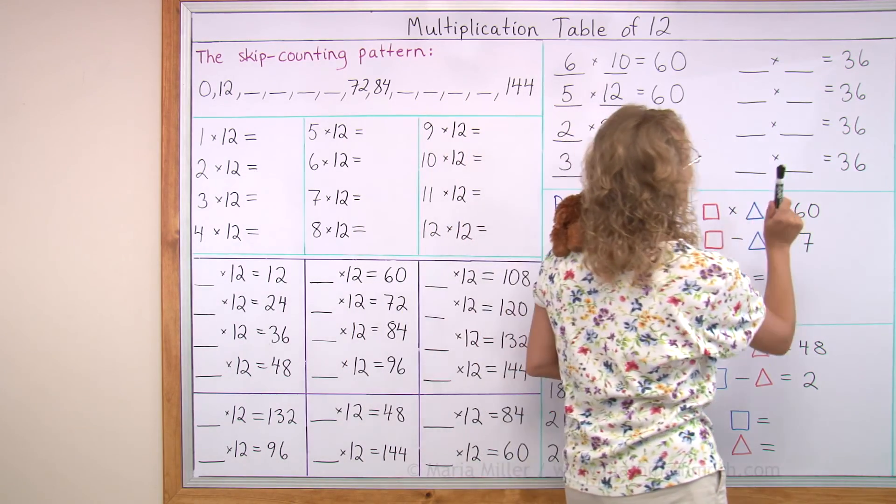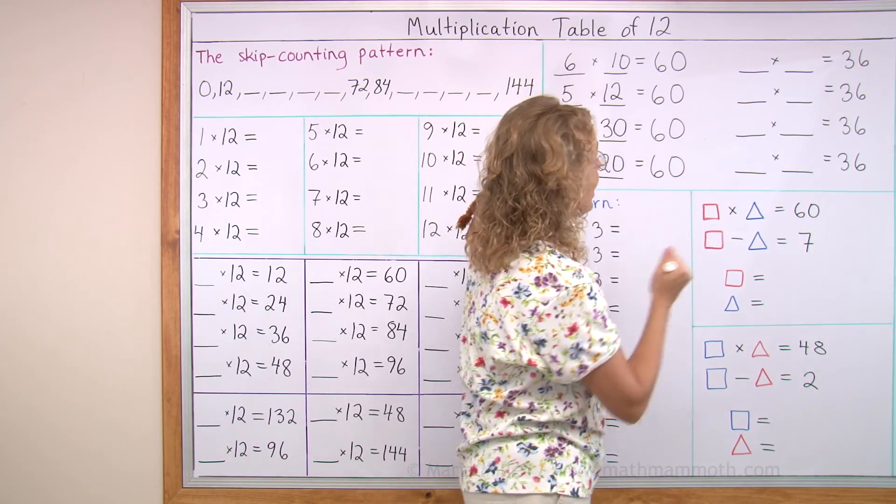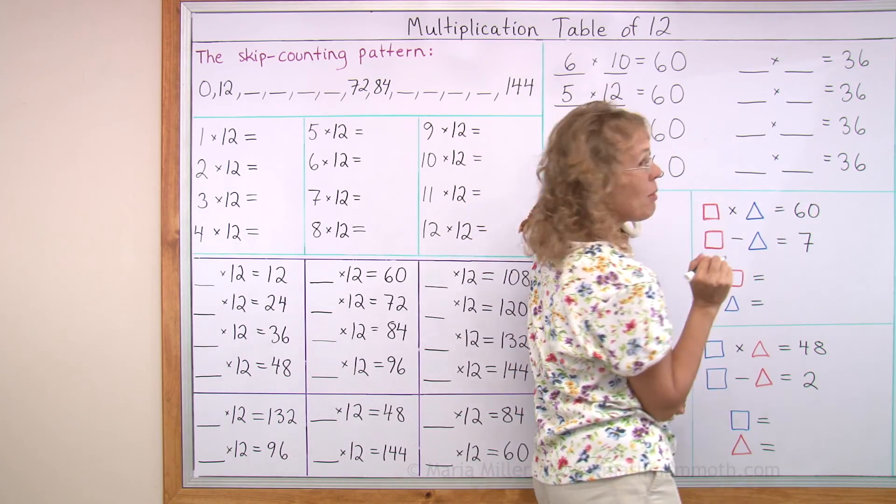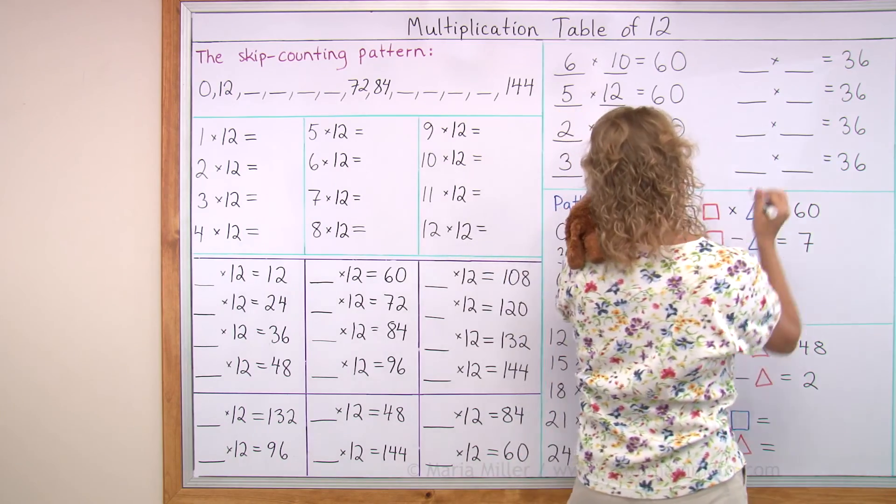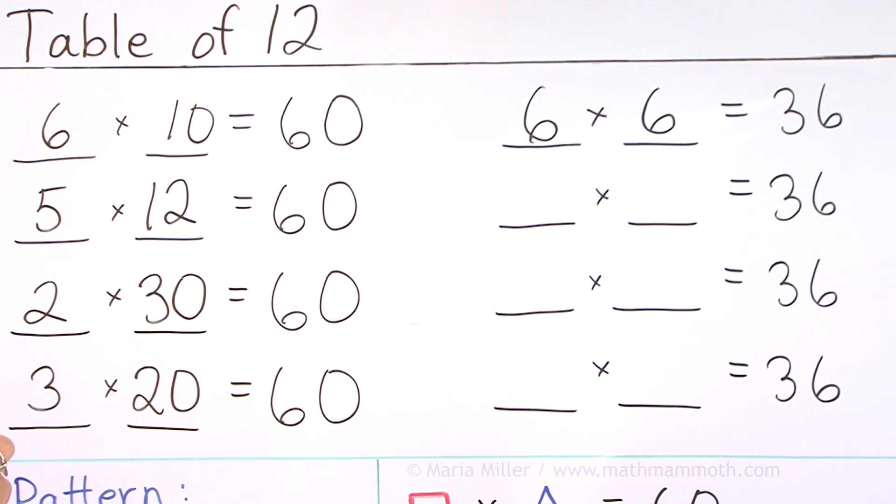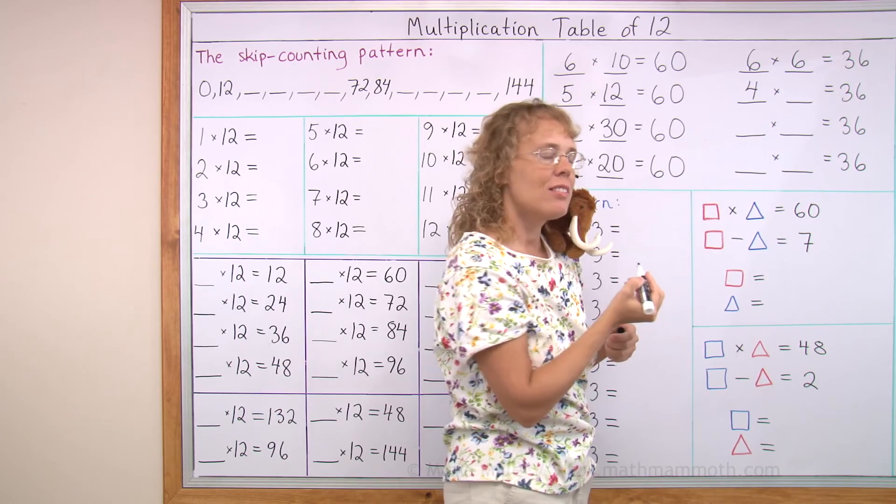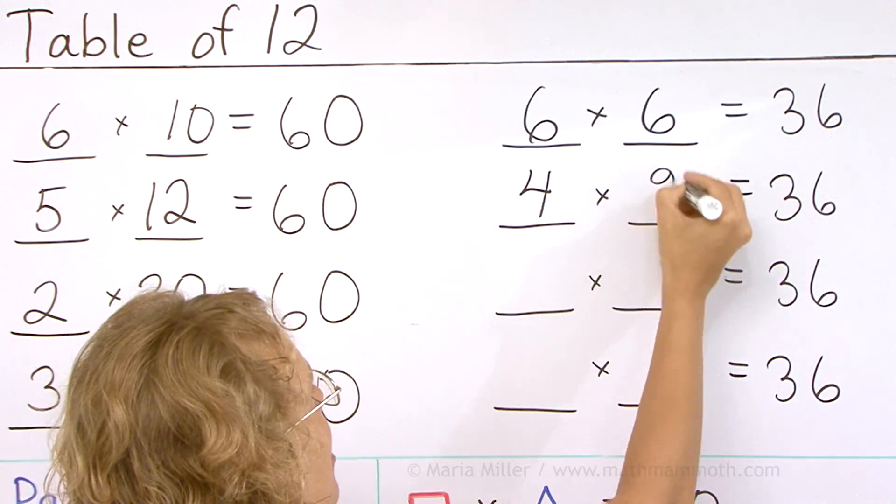How about the same for 36? Again, there's going to be many, many possibilities. Can you find them all? I'm going to start out with the rhyming one. Remember? Six times six. Yep. And then, okay, it's in the table of four, remember? Four times nine.